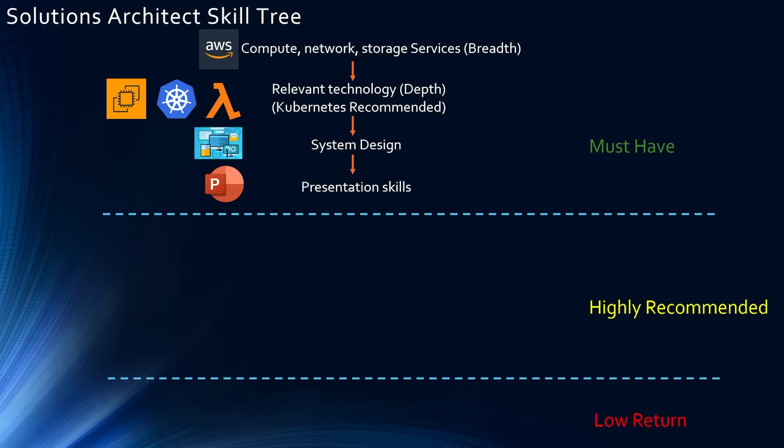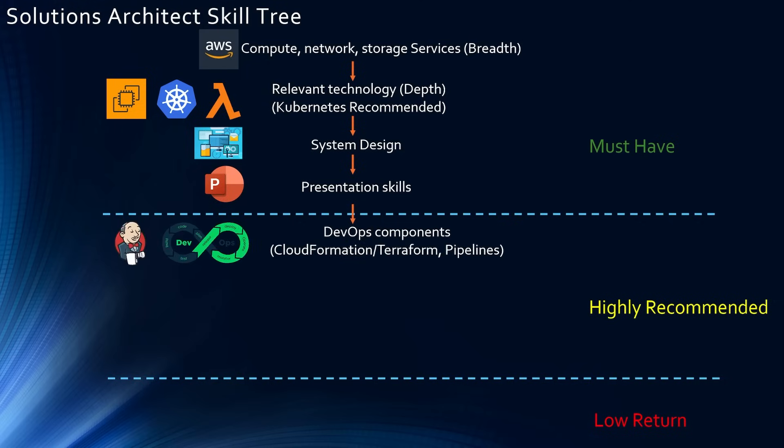The next highly recommended skill is DevOps components. These days, DevOps architect and solutions architect jobs are kind of getting merged in a lot of companies. Under DevOps components, you should know at least one infrastructure-as-code tool — either CloudFormation or Terraform — and you need to know how to create a pipeline using a CI/CD tool. Jenkins is the most popular one, but if your project uses GitLab, CircleCI, etc., you need to learn that.